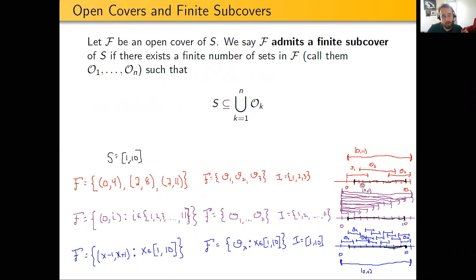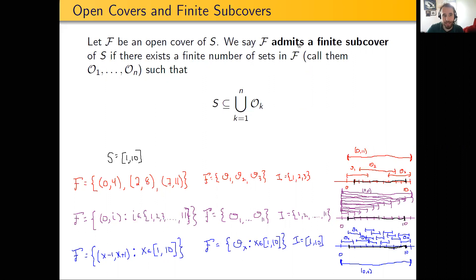Similarly, the purple set contains 11 sets but is its own finite subcover because it is already finite. So the really interesting question is this blue one, which has infinitely many open sets in it. Can we throw away all but a finite number of them?